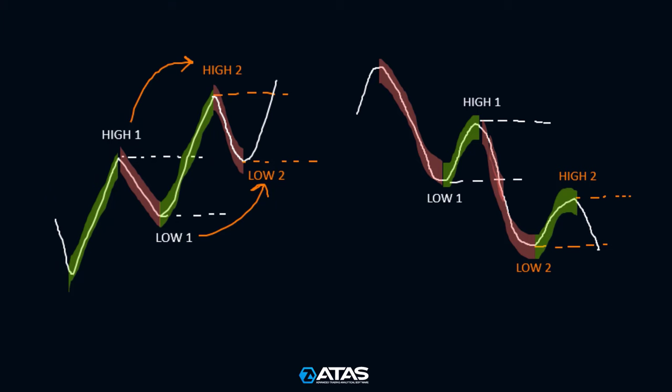Let's analyze each market phase, starting with the trend. The trend phase consists of two states: the first is the impulse, which is always expected in the direction of the main trend; the second is the correction, which typically develops longer than the impulse and has much less movement potential. In purely technical analysis, the trend is determined by a formula created decades ago. Signs of an upward trend emerge when the previous high is below the new one and the previous low is also below the new one or approximately equal to it. For a downward trend, the pattern is reversed.